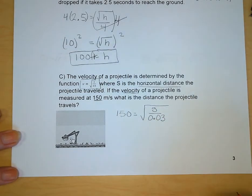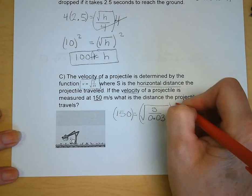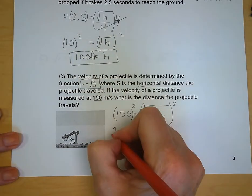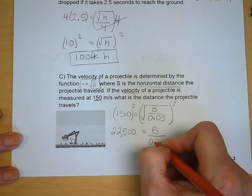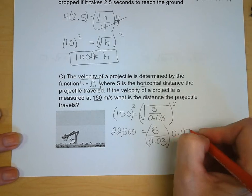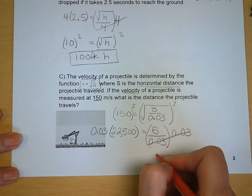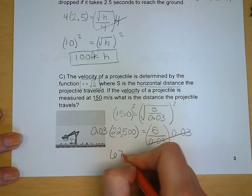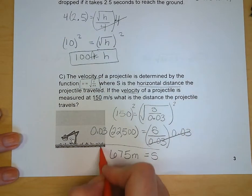So is there anything we can do outside the radical? No, we just need to start off by squaring it. So 150 squared is 22,500 and that is equal to S squared over 0.03. Now we need to multiply both sides of the equation by 0.03. And we're going to get that the horizontal distance is 675 meters. We're using metric units for this one.